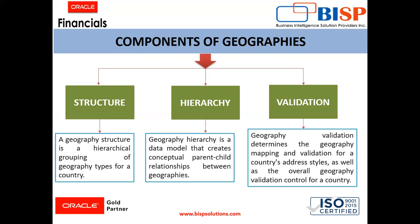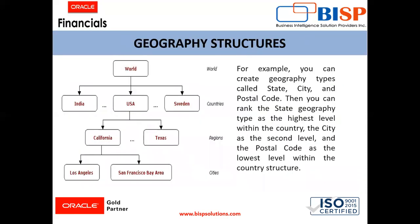We'll understand each term one by one and then see how these geographies are managed in Oracle Fusion applications. To understand geography structure, we'll consider an example: there is a world, then countries, then regions, and then cities.